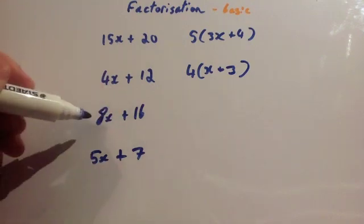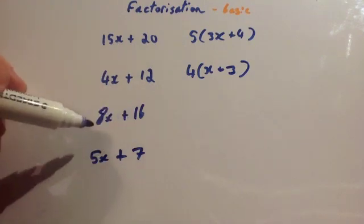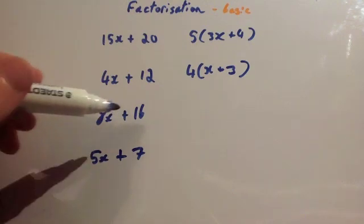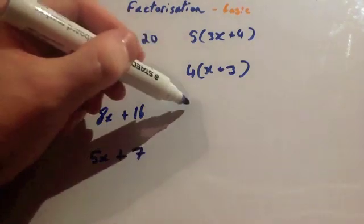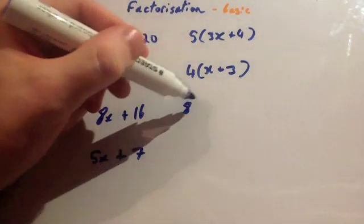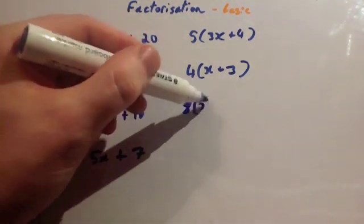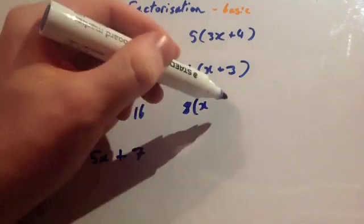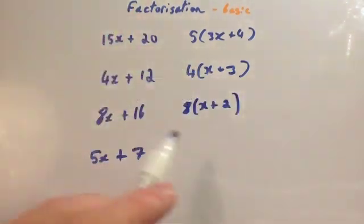Next: 8x + 16. Again, these are divisible by 2 and by 4, but 8 is the largest factor. So we go for 8(8x ÷ 8 + 16 ÷ 8) = 8(x + 2).